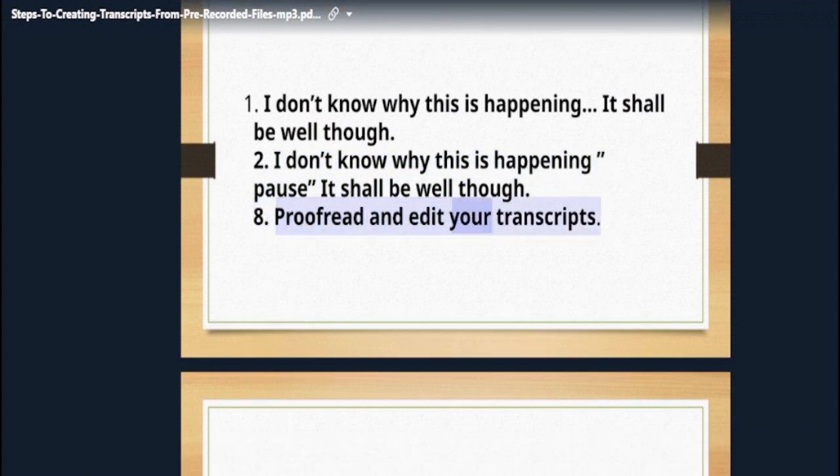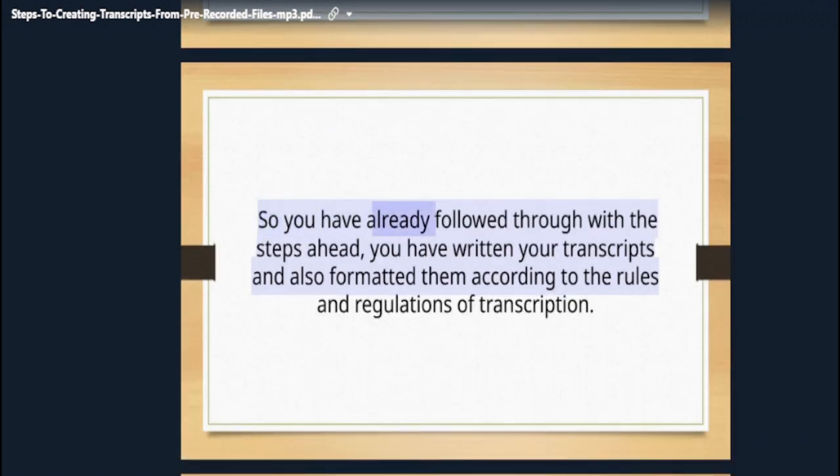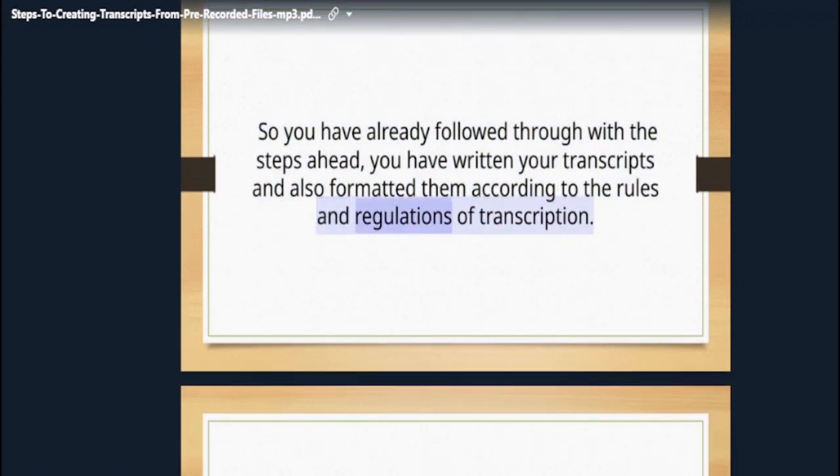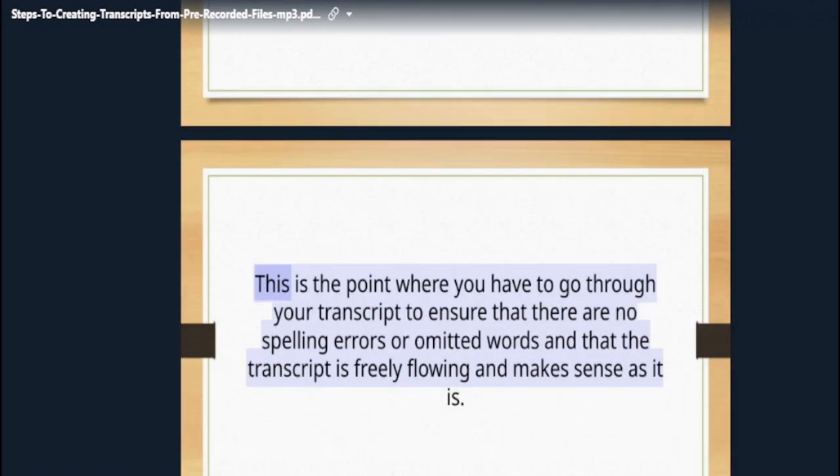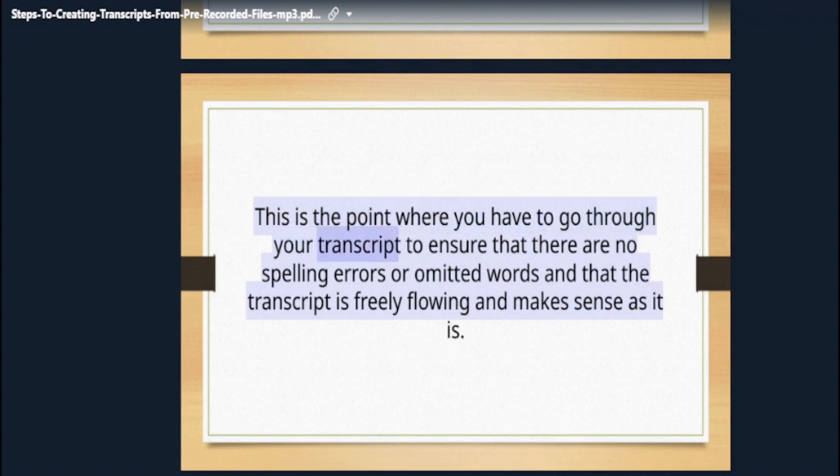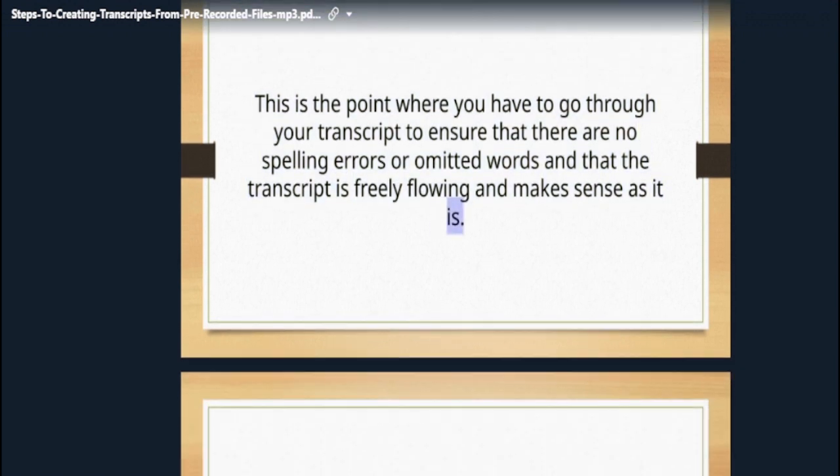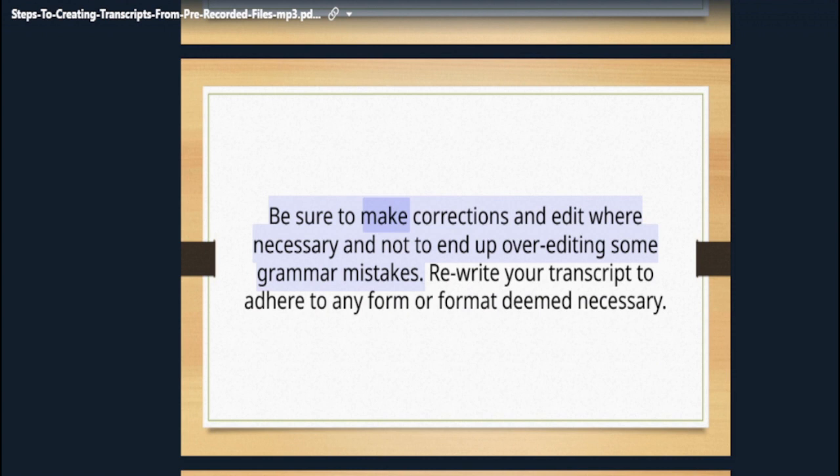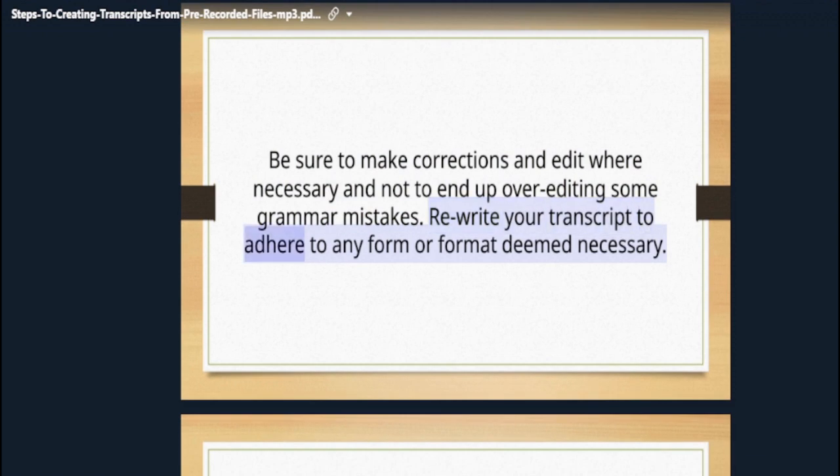Step 8: Proofread and edit your transcripts. So you have already followed through with the steps ahead. You have written your transcripts and also formatted them according to the rules and regulations of transcription. This is the point where you have to go through your transcript to ensure that there are no spelling errors or omitted words and that the transcript is freely flowing and makes sense as it is. Be sure to make corrections and edit where necessary and not to end up over-editing some grammar mistakes. Rewrite your transcript to adhere to any form or format deemed necessary.